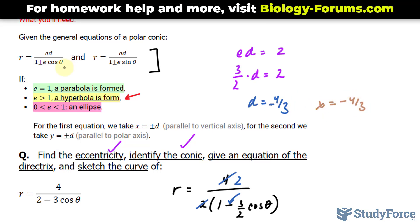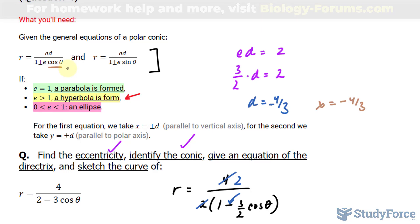And I chose x because we're dealing with cosine. Had it been sine, I would write down y equals. So it would be a line that's parallel to the polar axis. Therefore, what you see here represents the equation of the directrix.